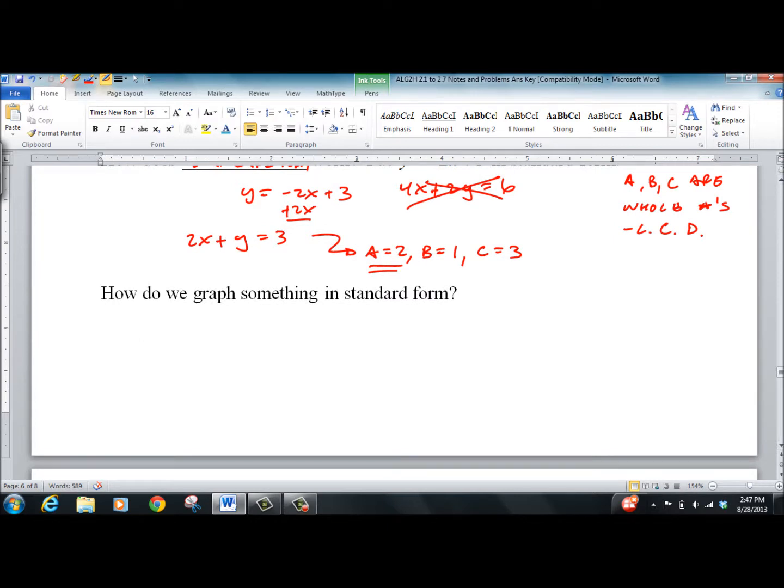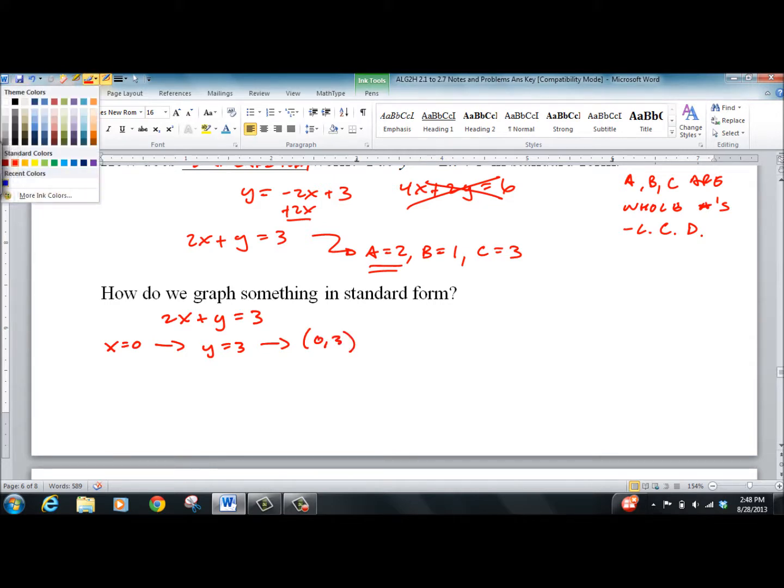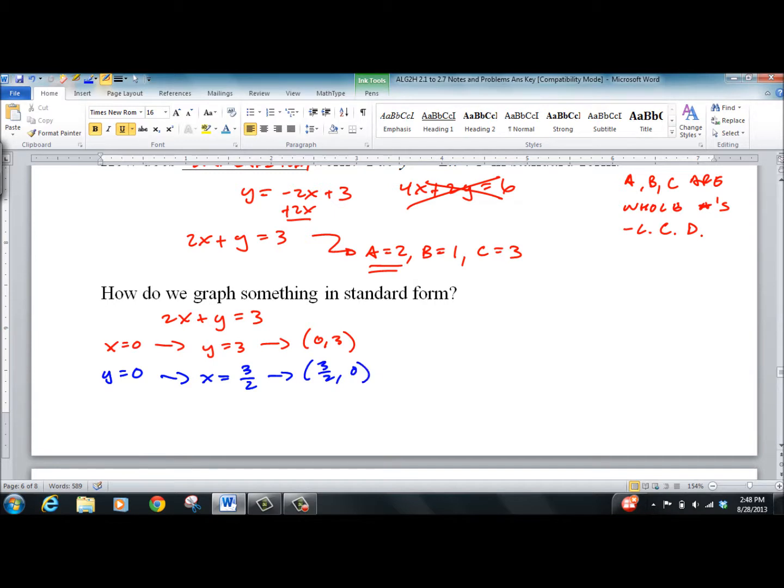So how do we graph something in standard form? 2x plus y equals 3. And you probably know how to do it. Y equals mx plus b. We're doing it differently. Let's make x equals 0. If x equals 0, y equals 3. So that means we could graph the point 0 comma 3. We could also do y equals 0. In which case x equals, if this is 0, 3 halves. So we'd have the point 3 halves comma 0.